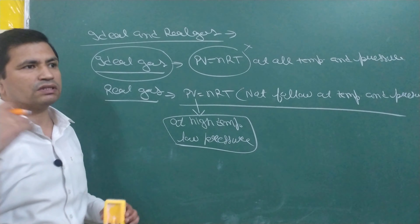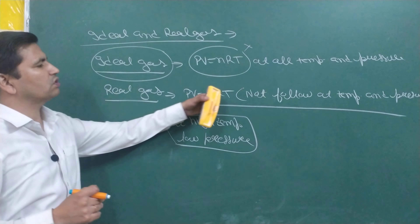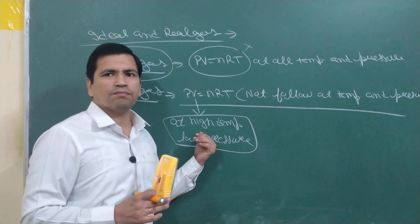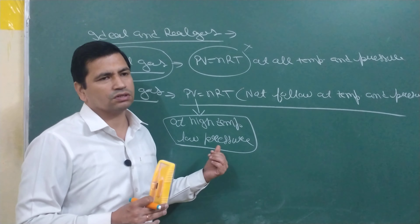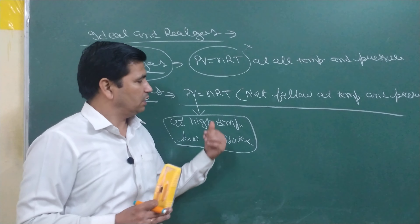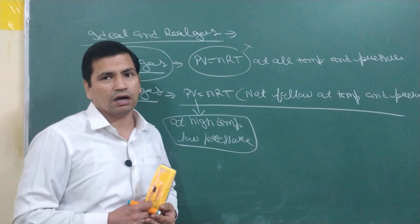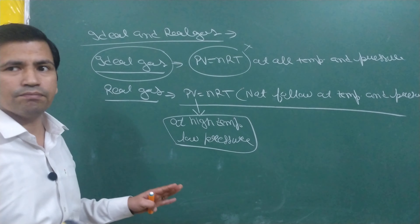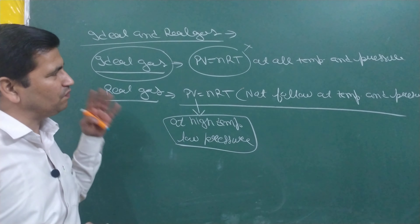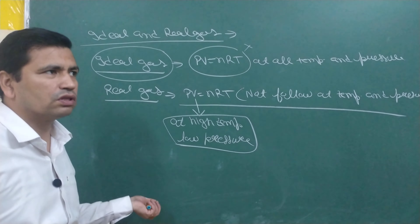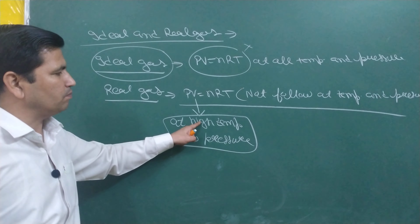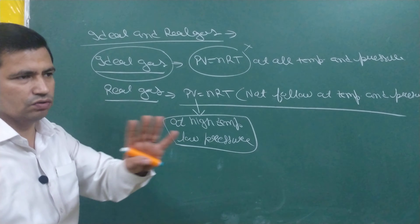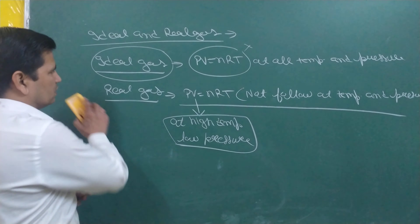Every gas is real gas. This means every gas will follow PV = nRT, but only when temperature is very high and pressure is low. So we need to understand what happens such that PV = nRT is only followed at high temperature and low pressure, and why it is not followed when temperature decreases and pressure increases.